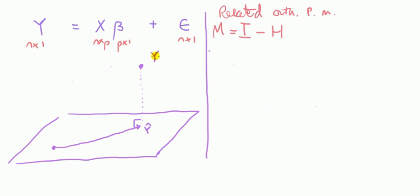What M does is it maps your vector onto the space orthogonal to the column space spanned by H. In other words, if I applied it to MY here, what I would end up with is this vector. This is MY.